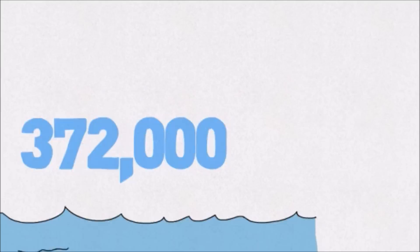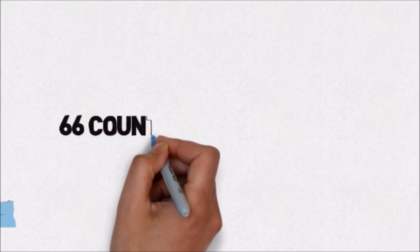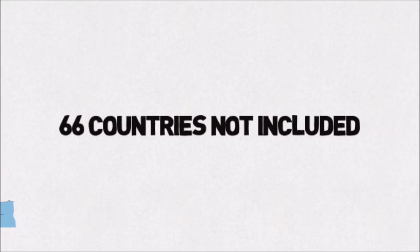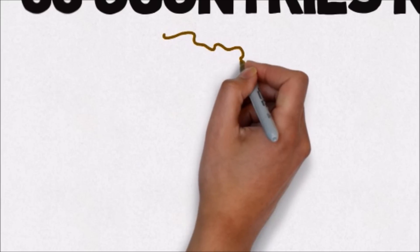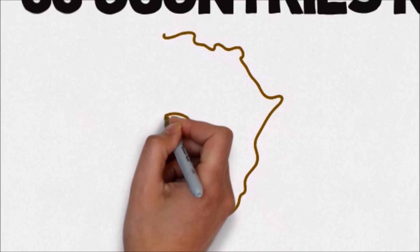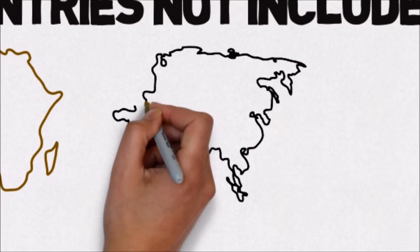But the global problem is much worse than that. Those figures do not include data from 66 countries, most of which are in Africa and Asia, the two regions with the worst known drowning rates and most of the world's children.